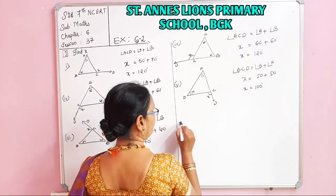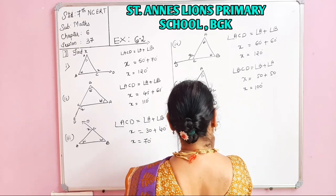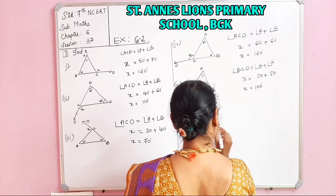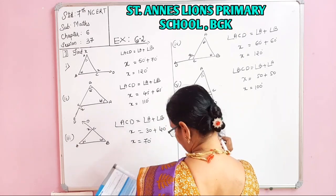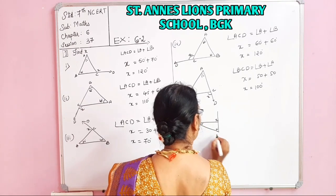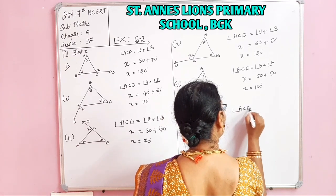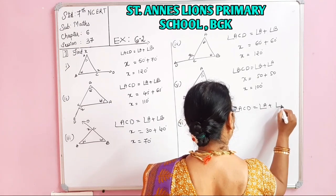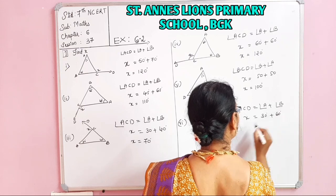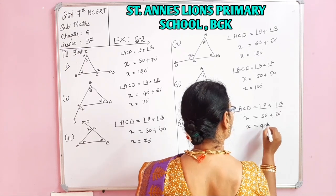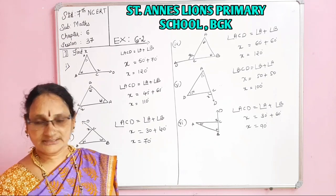The first part's last problem is the sixth one. This is X, the angles given are 60 and 30. Points A, B, C and D. Angle ACD is equal to Angle A plus Angle B. ACD is X, Angle A is 30 plus 60. X is equal to 90 degrees. That completes the first part.